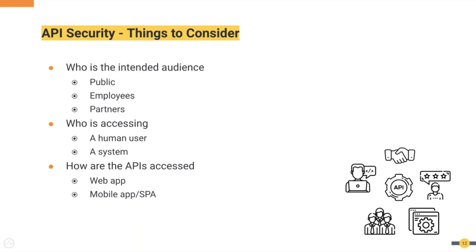Some of the aspects that you should consider for your API strategies are as follows. First, who is the intended audience for your APIs? The API access can be public, which enables anonymous users or registered customers to access them.